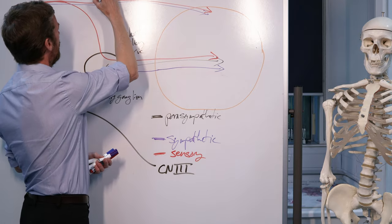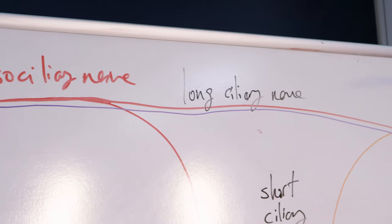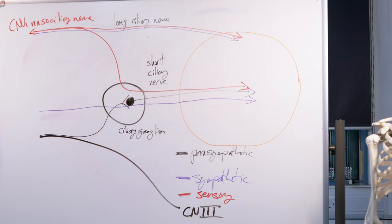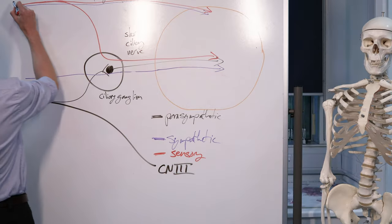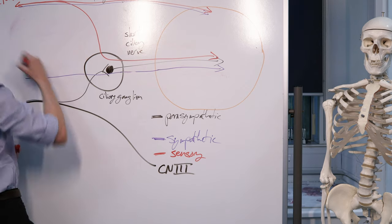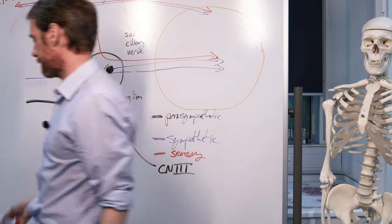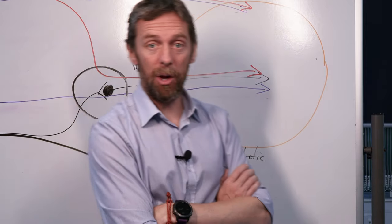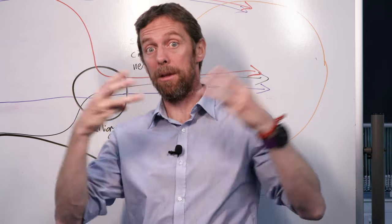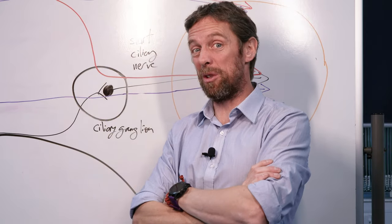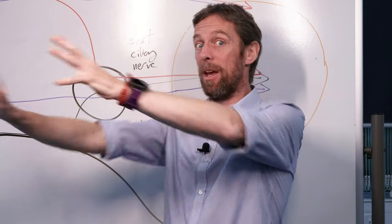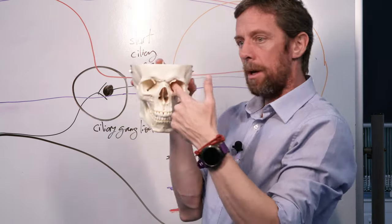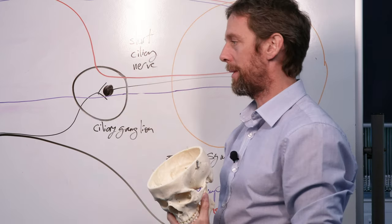We have the short ciliary nerve running from the ciliary ganglion to the eye, and it seems sensible to name the other nerve running directly the long ciliary nerve. Just remember the sensory nerves are running in the afferent direction back toward CN V1. So cranial nerve 3 chucks off parasympathetic neurons that synapse in the ciliary ganglion and run into the eye; sympathetic neurons run straight through; and the naso-ciliary sensory neurons also pass through. The key point is that only the parasympathetic neurons actually synapse in the ciliary ganglion - everything else is just passing through. The ciliary ganglion itself is within the orbit.